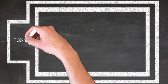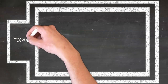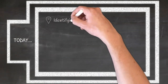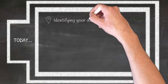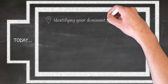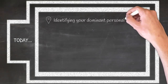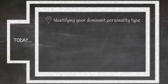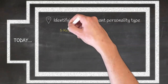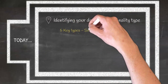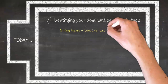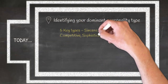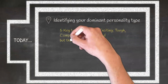Start by identifying your natural personality type. There can be five major types of personalities: sincere, exciting, tough, competitive, and sophisticated. You could be a person with a combination of these traits, but one of them would be your dominant side.